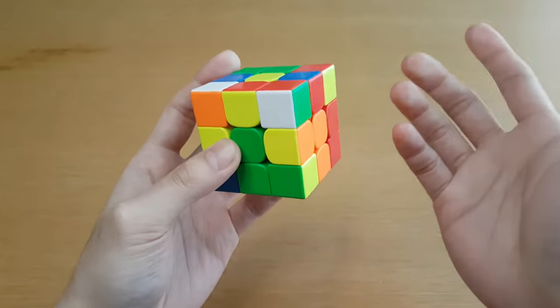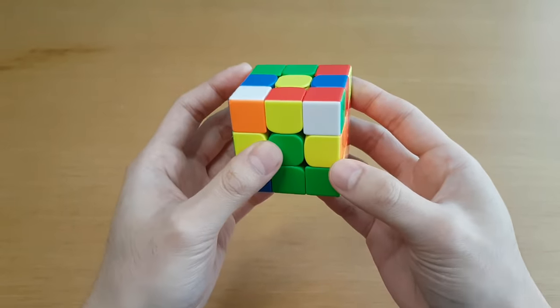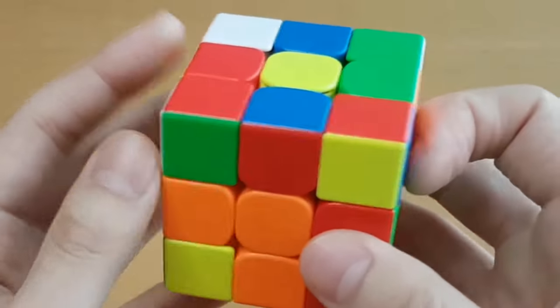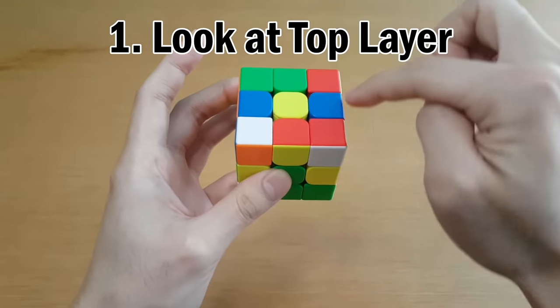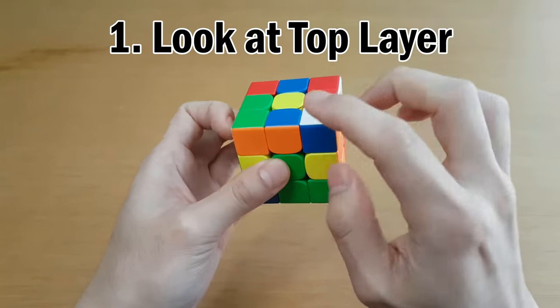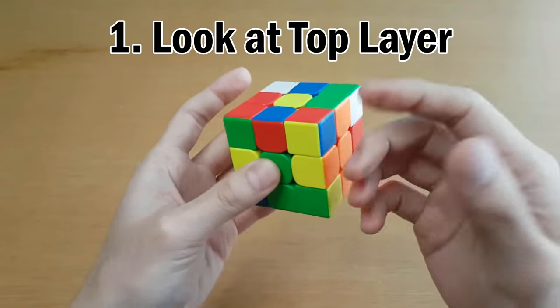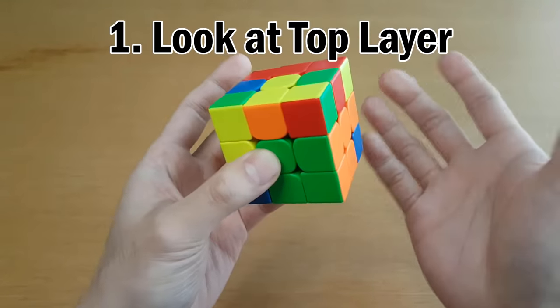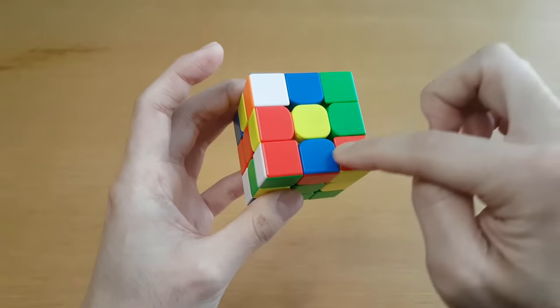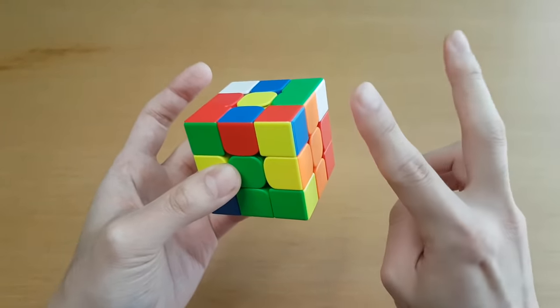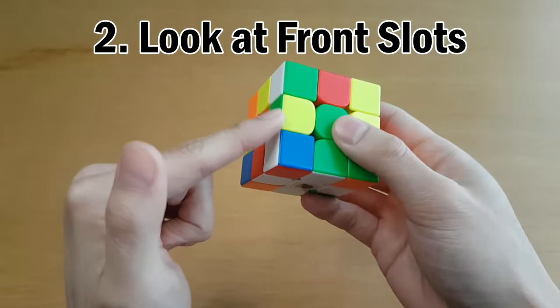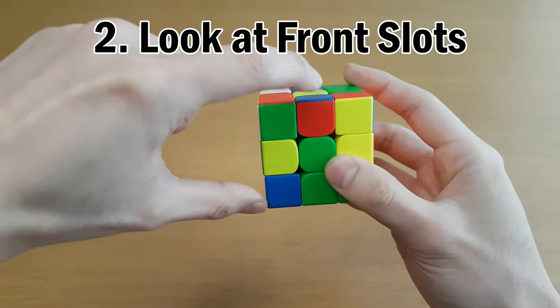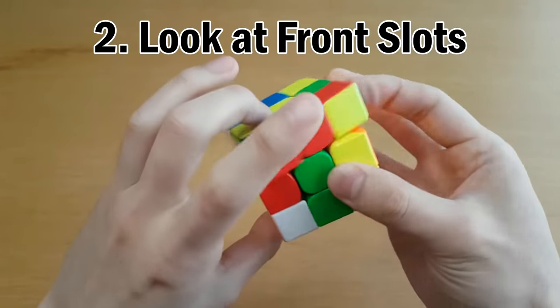Number four, how to find pieces faster. Finding the pieces you want during F2L is hard, but don't do this. The first thing you should do is look around the top layer using U moves. There you go. There you go. Now we can easily solve one of these cases and not do any cube rotations. But if you didn't find what you were looking for in the U layer, the second thing to do is look in your front slot. And that may give you something you want and you can solve that one right away.